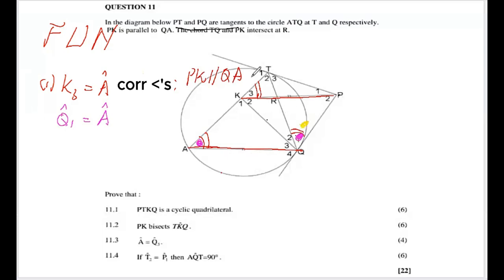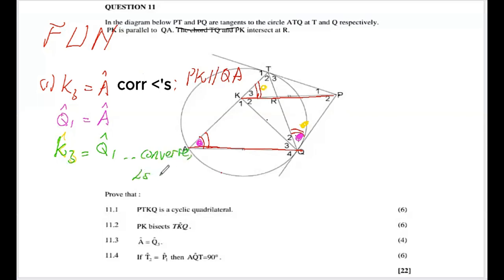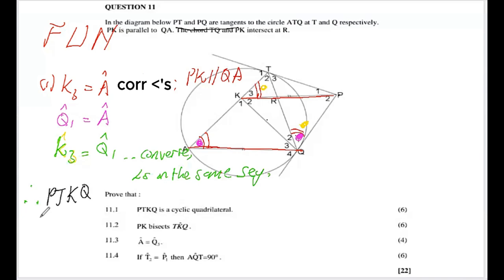We now have two angles equal to A. Looking at K3 and Q1 in relation to quadrilateral PTKQ, these are angles on the same segment. So K3 equals Q1. We say 'converse angles on the same segment' — using 'converse' because we haven't yet proven it's a cyclic quad. Therefore, PTKQ is a cyclic quadrilateral.